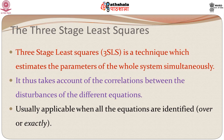In the single equation methods, suppose out of g equations say two of them are not identified, then we could have used single equation methods for g minus 2 of the identified equations and got the parameters. In this case, however, you need to have all the equations identified.